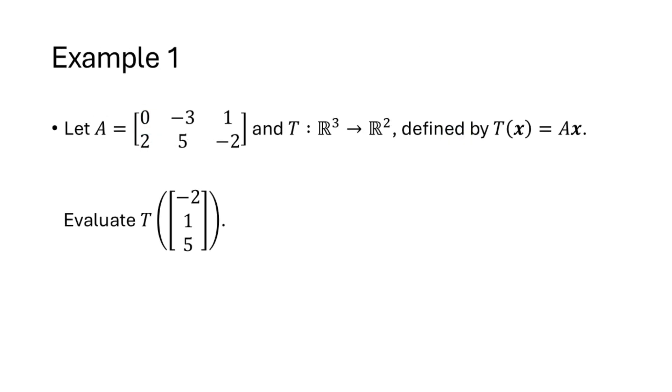Let's take a look at an example. So here we have A, which is a 2 by 3 matrix, 2 rows and 3 columns, which means that its domain is R3 and its codomain is R2. And here we're being asked to evaluate t of the vector. And notice that that vector has 3 entries, which means that vector is in our domain, which means we can evaluate t of that vector.